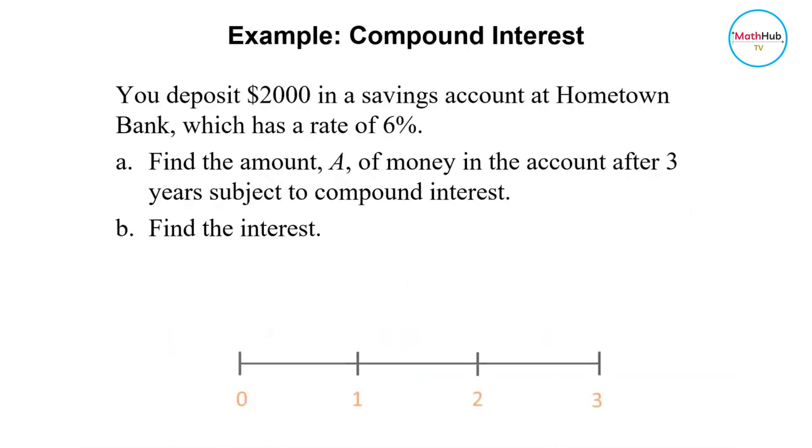Now consider the following example. You deposit $2,000 in a savings account at a hometown bank, which has a rate of 6%. Now find the amount A of money in the account after 3 years subject to compound interest, and also find the interest.